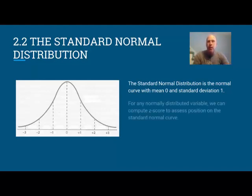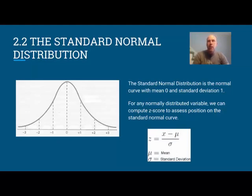So for any normally distributed variable, we can compute z-score to assess position on the standard normal curve. Remember the z-score formula, which is given here, but now notice I'm filling it in with our formal symbols for population mean and standard deviation.